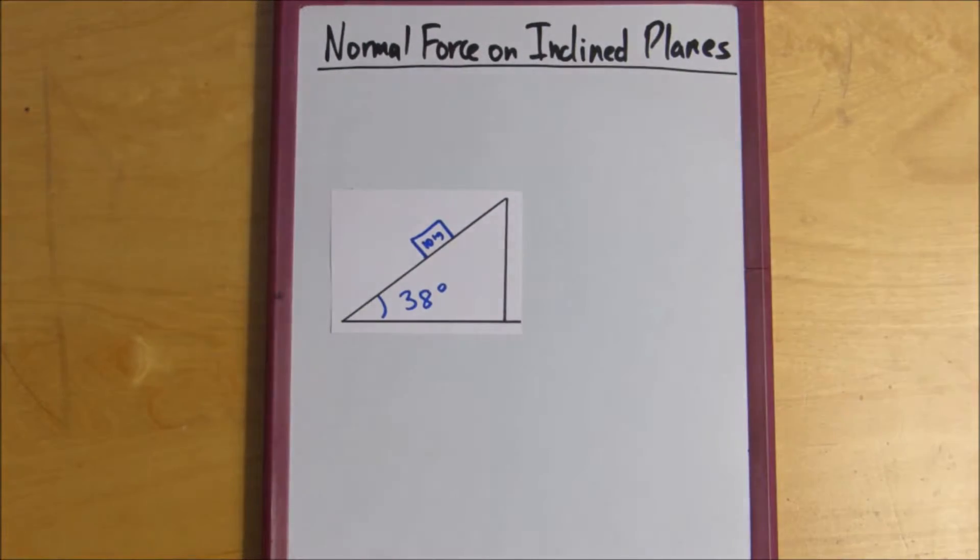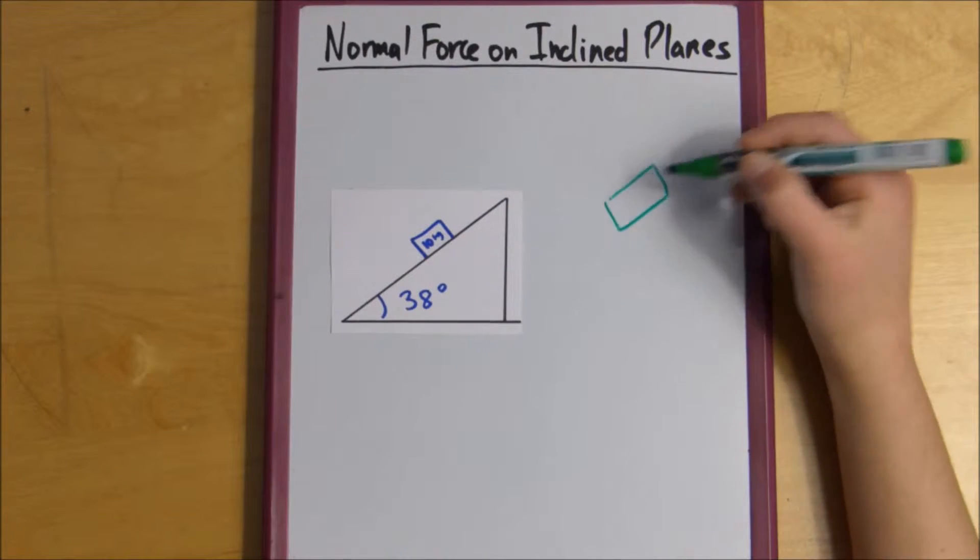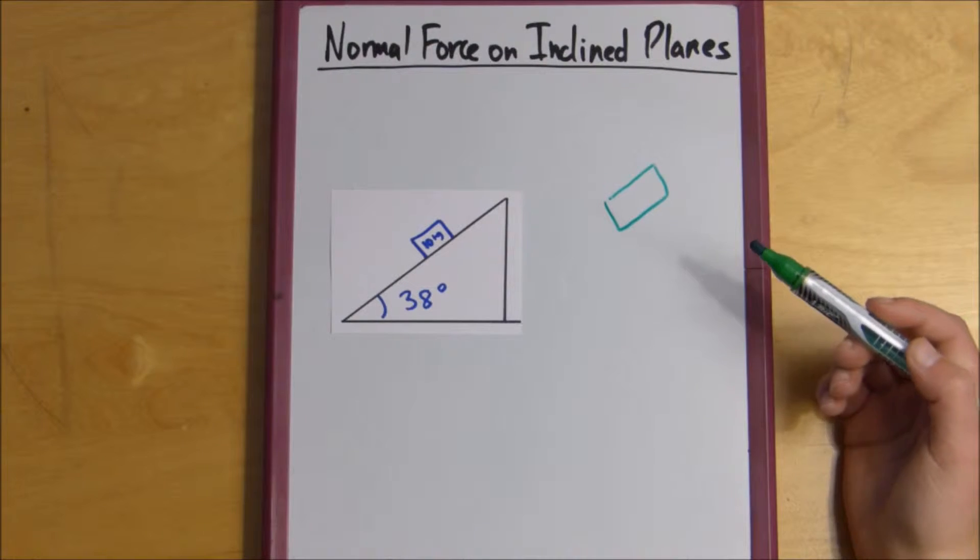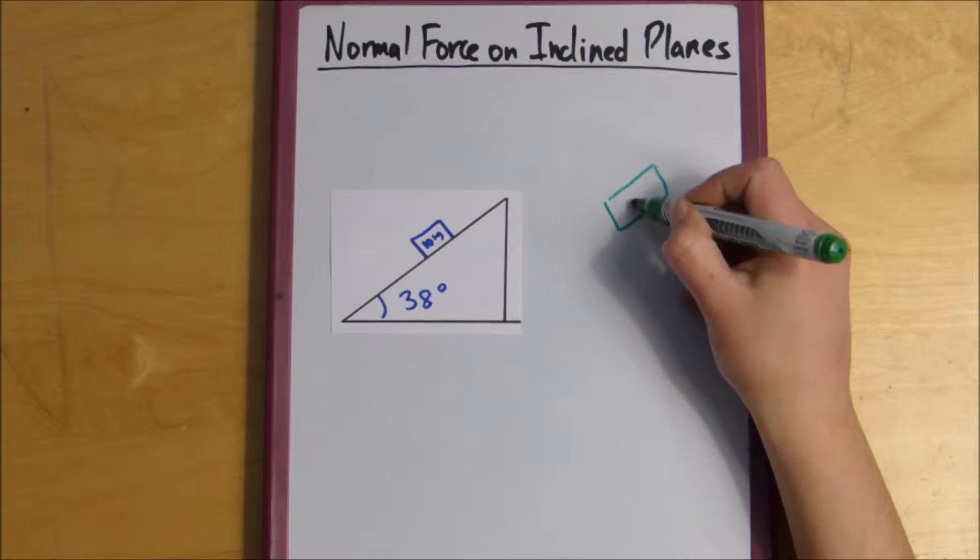And now the first step to figuring out what the normal force is equal to is we're going to want to figure out where the normal force is. So if I draw our little mass here, we know that weight force is always directly down. That's the effect of gravity.